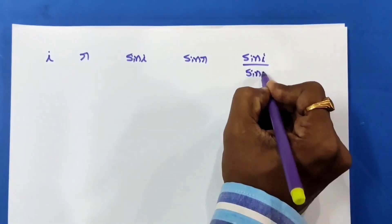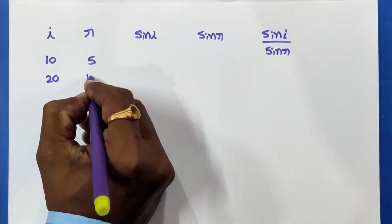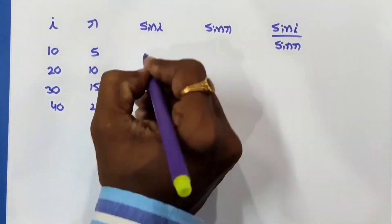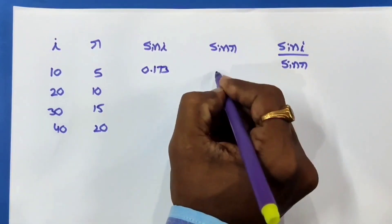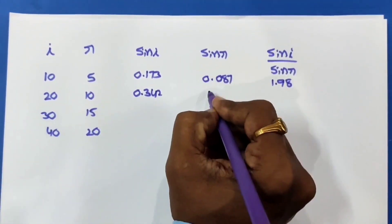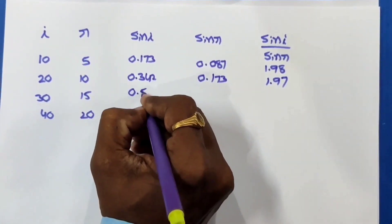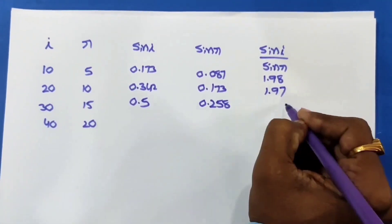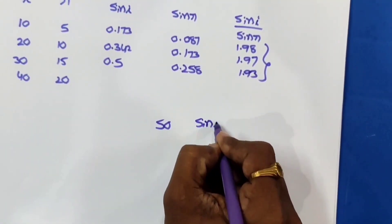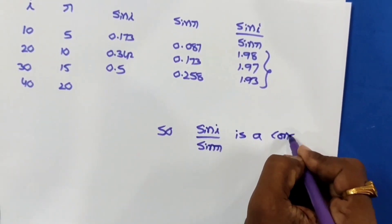Angle of incidence is 50. So, sin(i) by sin(r) values are constant. So, sin(i) by sin(r) is constant.